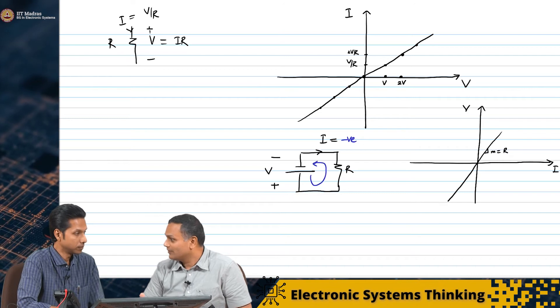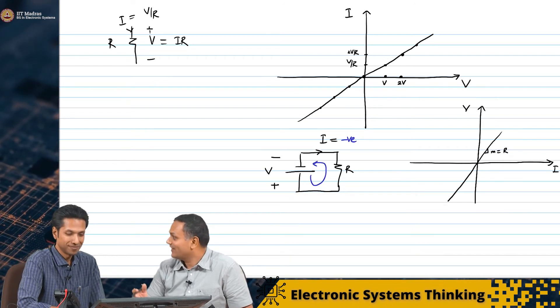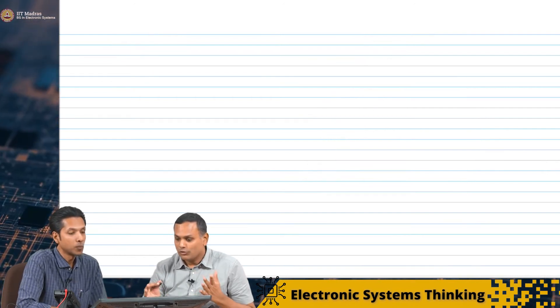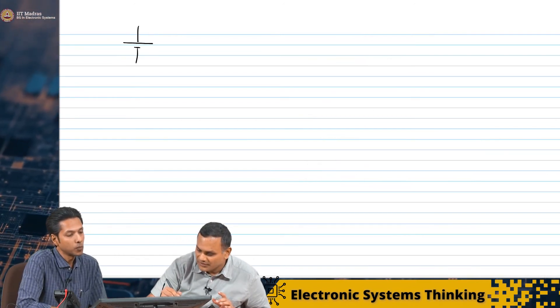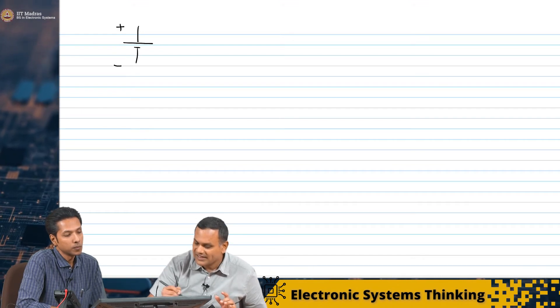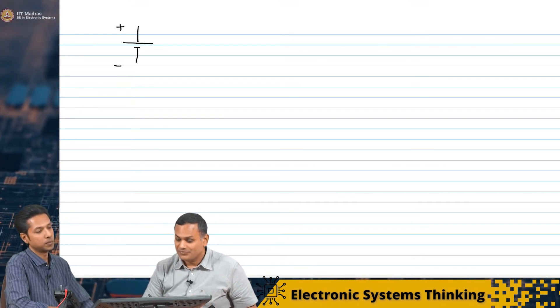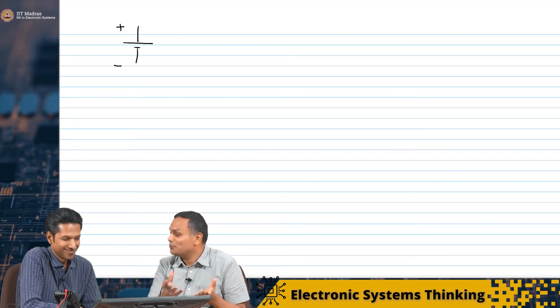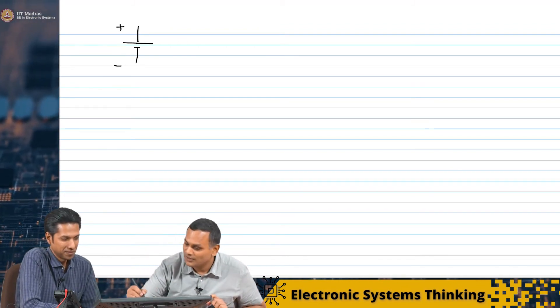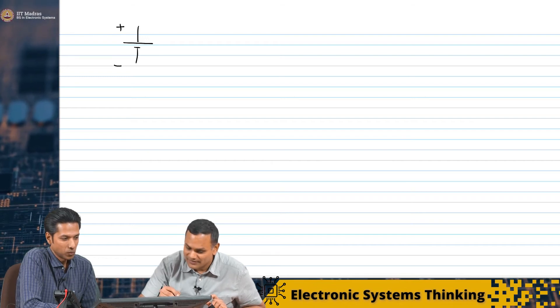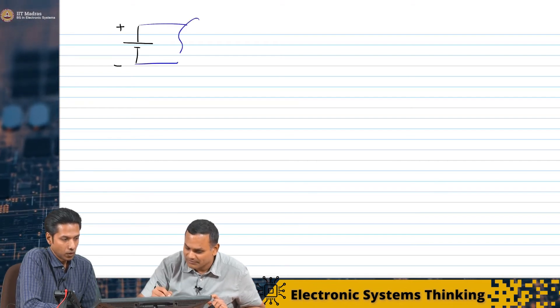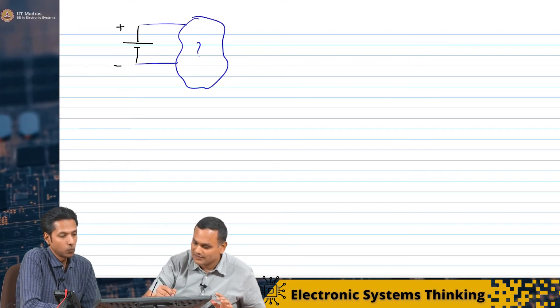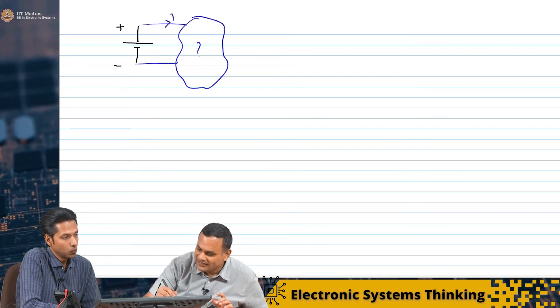We can also plot the VI characteristics for a voltage source or a current source. Now, I'm going to draw for a voltage source. If I were to draw the VI characteristics for just a voltage source, this is now becoming a little bit abstract because I don't know what is connected. I'll draw it like this. I don't know what is there.